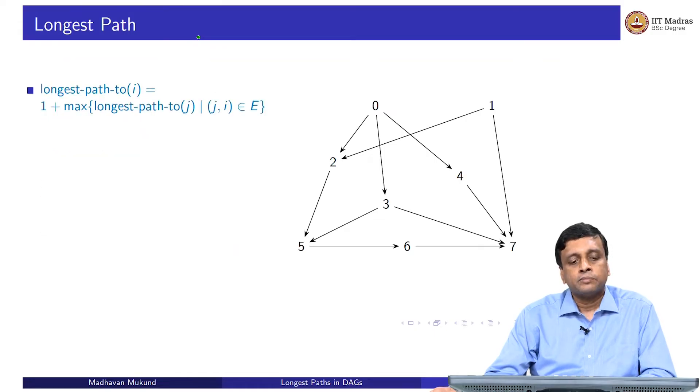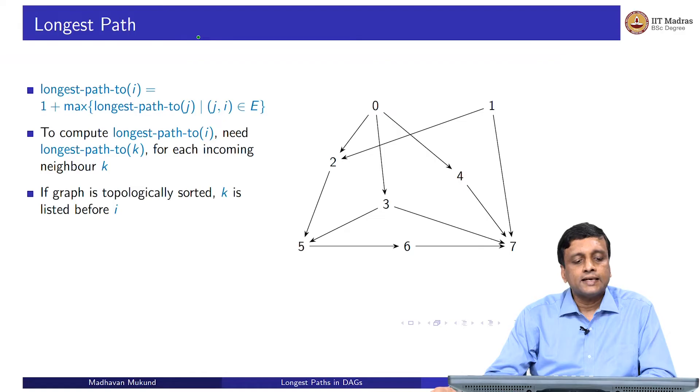Since I need to know the maximum of these longest paths, I need to enumerate them before I enumerate this vertex. But this is precisely the point of topological sorting. When I am processing a vertex k and trying to compute its longest path, I need to know the longest paths of everything which has an edge pointing into k. But in a topological ordering, this would have been done.